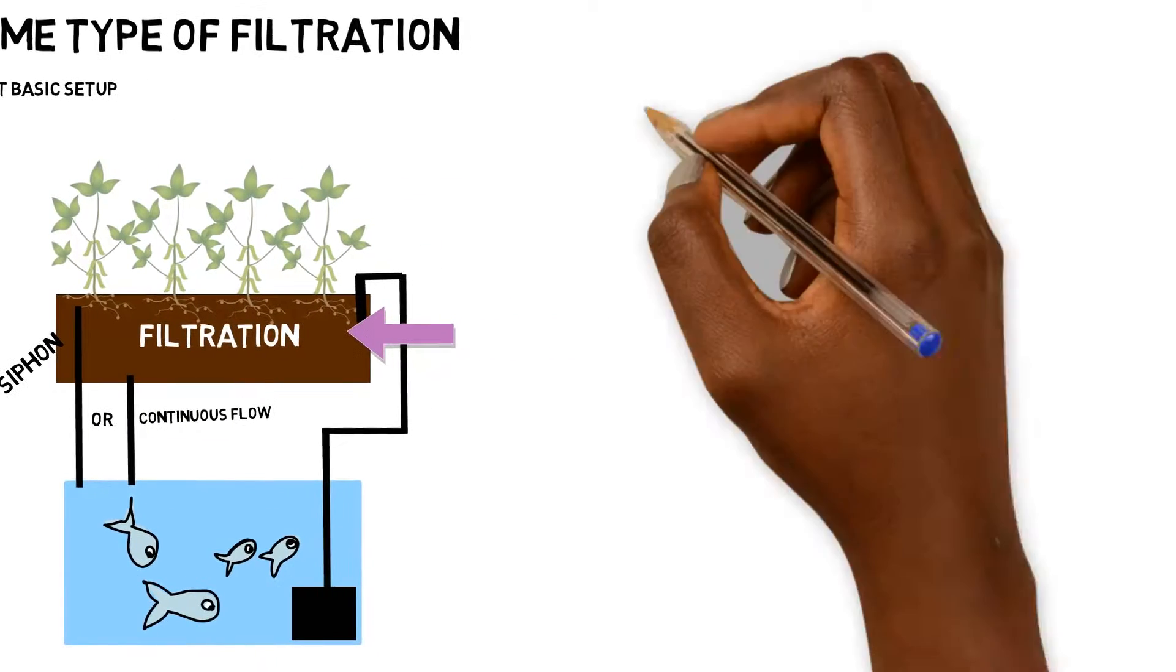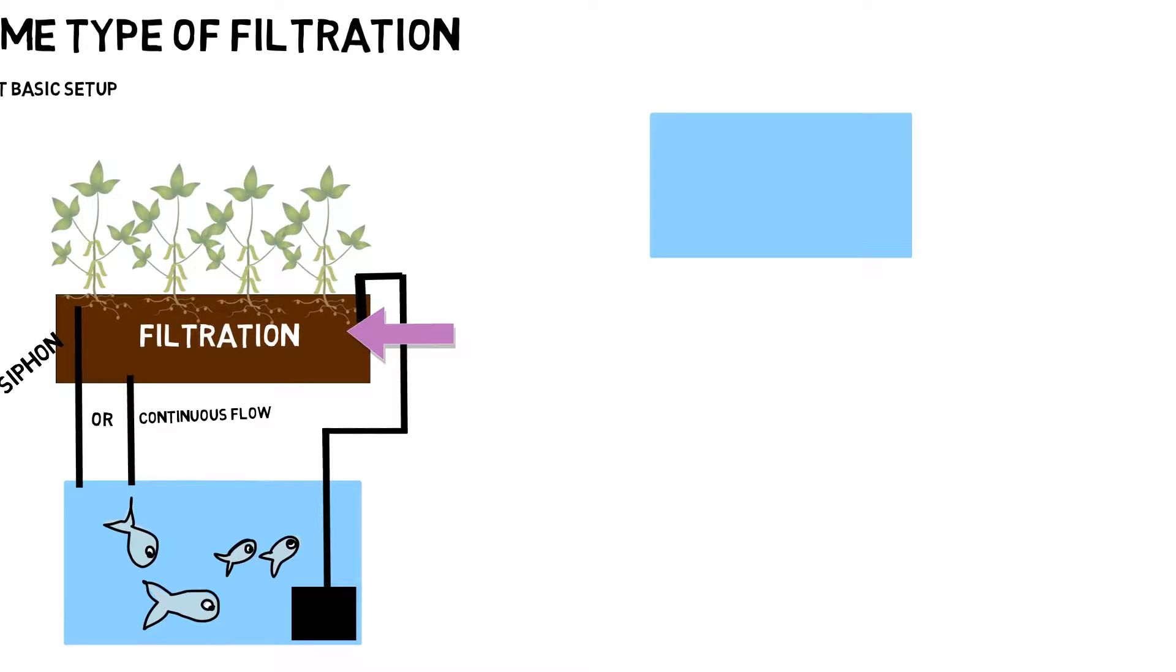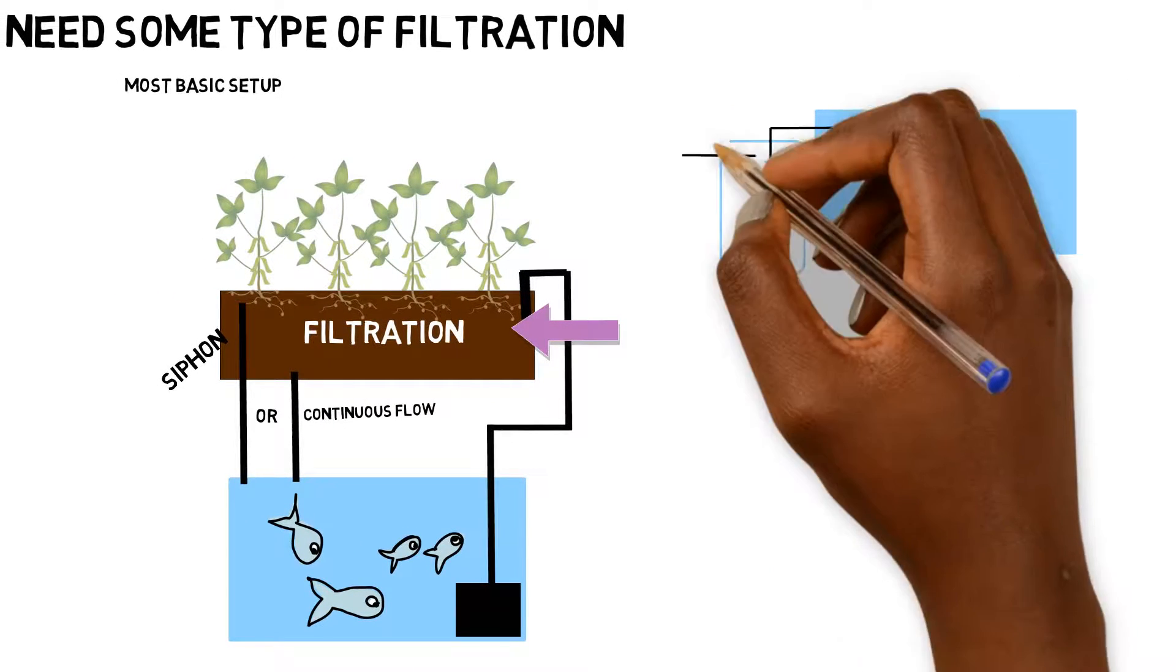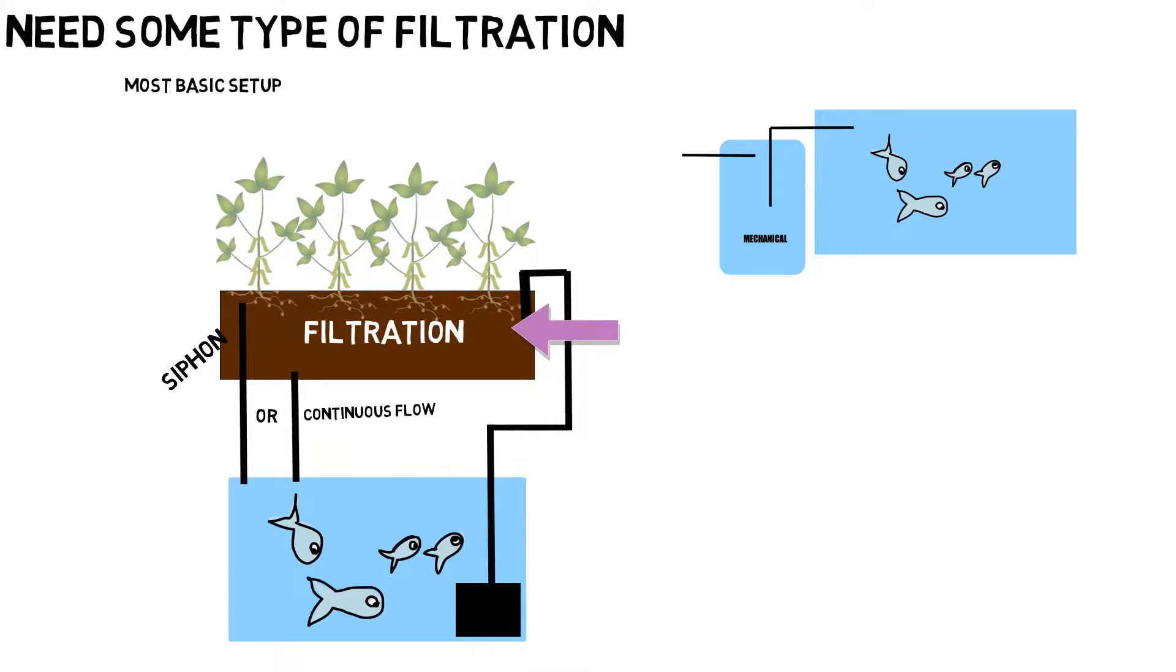So what you can do is you can have your aquarium tall, you can have it high, higher than everything else in the system. And then from there, the outlet of the aquarium is going to come down and it's going to enter into a mechanical filter.